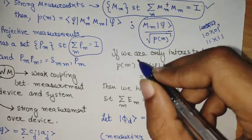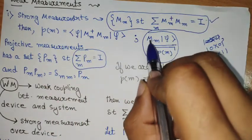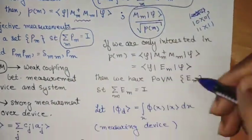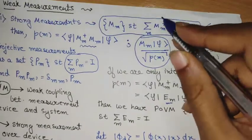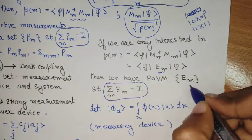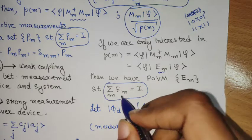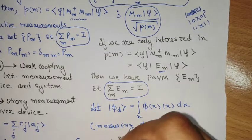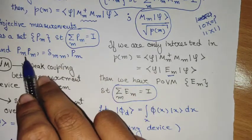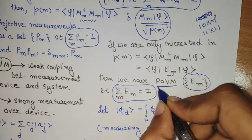If we are only interested in the probability without any interest in the final state of the system, we can denote this entire value as some E_M. In that regard, this completeness relation will now be of this form. This indexed set with this kind of relation is more relaxed in the sense it doesn't have the projective constraint. This kind of measurement set is called a positive operator valued measure (POVM).